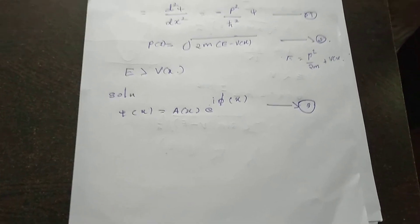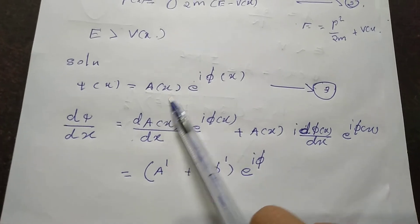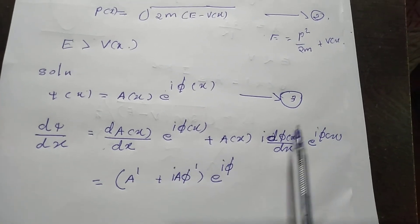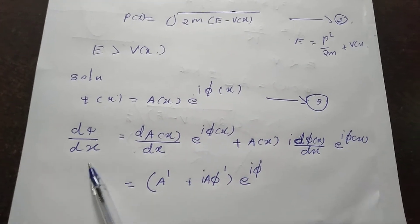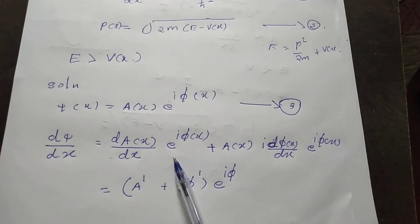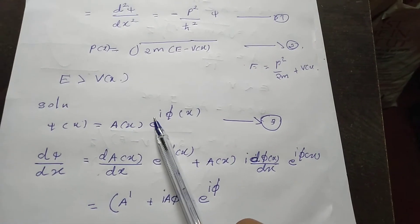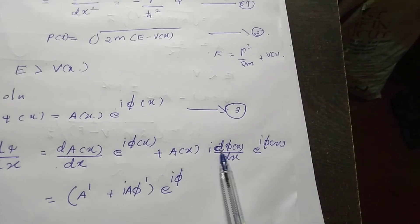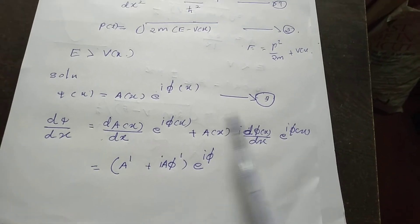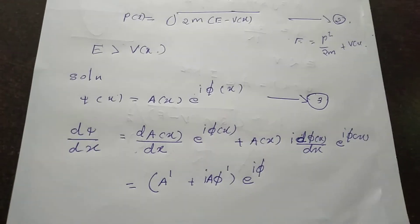We find d psi by dx. Since both the amplitude factor A(x) and phase factor phi(x) are functions of x, we must consider dA/dx and d phi/dx. So we get d psi by dx as: (A dash) times e raised to i phi(x), plus A(x) times i times phi dash times e raised to i phi, which can be written as (A dash plus i A phi dash) times e raised to i phi. Similarly, d squared psi by dx squared gives: (A double dash plus 2i A dash phi dash plus i A phi double dash minus A times phi dash squared) times e raised to i phi. This is equation number 4.